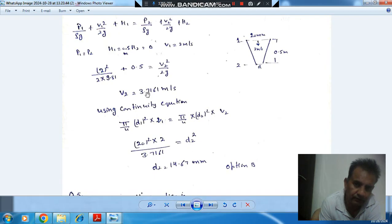v2 we have just found out is 3.716, so d2 comes out to 14.67 mm and the answer is option B.